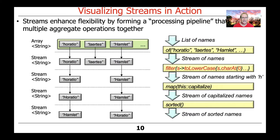The next thing that happens is that gets connected with the filter intermediate operation — or aggregate operation. After we do the filtering, we end up with a stream of names that start with an uppercase or lowercase H. As you can see visually, what's happened is that Laertes, Claudius, Gertrude, Ophelia, Rosencrantz, Guildenstern, and so on have all disappeared. Rosencrantz and Guildenstern disappeared for other reasons — but basically we've got rid of them, and now we have Horatio and Hamlet.